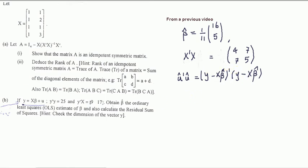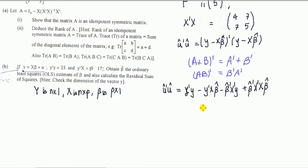To recap, using the transpose rules: the residual sum of squares is a scalar — just a number. We can check dimensions: that's one by one, this is one by one, one by one — good. We can simplify and combine these two terms.